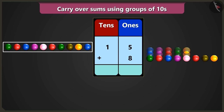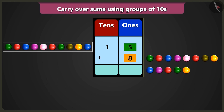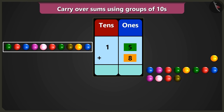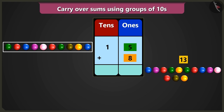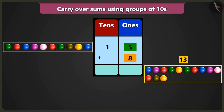Now in the box of ones, when we add 5 ones and 8 ones, then after 5: 6, 7, 8, 9, 10, 11, 12 and 13 marbles. But how will we write 13 in the box of ones? Bubbly, look — here out of 5 ones and 8 ones, we can make a group of 10 because the numbers add up to 13, that is 1 ten and 3 ones.